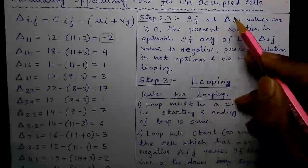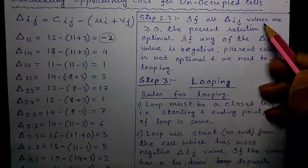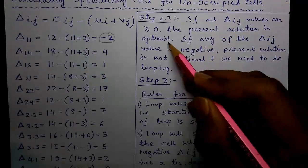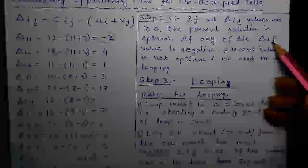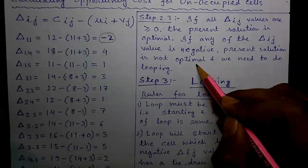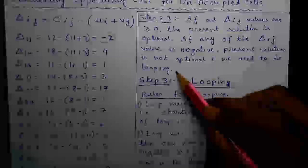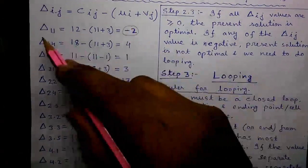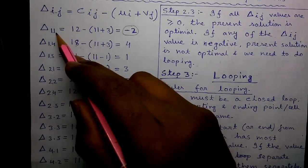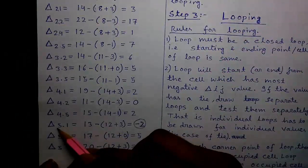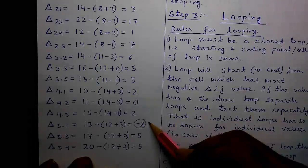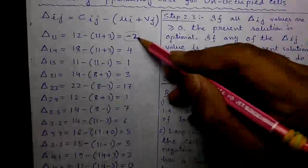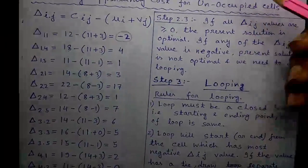Step 2.3, if all del IJ values are greater than or equals to 0, the present solution is optimal. But if any of the del IJ value is negative, present solution is not optimal and we need to do the looping. And as you can see in our case, we have two negative values, one at del 1, 1 position and another at del 5, 1 position. And both have the same negative value that is negative 2. So we need to do the looping and I will continue the looping in my part 2 of the video.